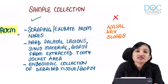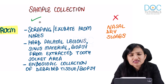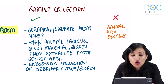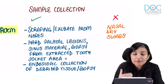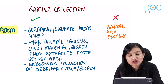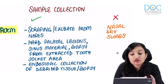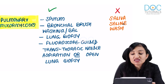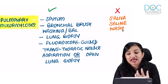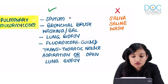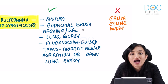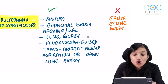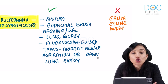In ROCM, the correct sample is scraping or exudate from the nares or hard palatal lesions, or sinus material / biopsy from the extracted tooth socket area. Endoscopic collection of debrided tissue or biopsy is also acceptable. Do not collect dry nasal swabs — that is an inappropriate specimen. In pulmonary Mucormycosis, do not collect saliva-saline washes; instead go for sputum, bronchial brush washings, BAL (bronchoalveolar lavage), lung biopsy, fluoroscope-guided transthoracic needle aspiration, or open lung biopsy.